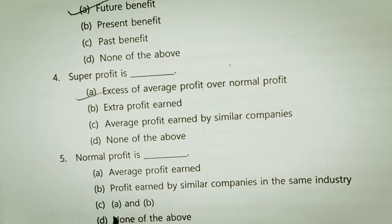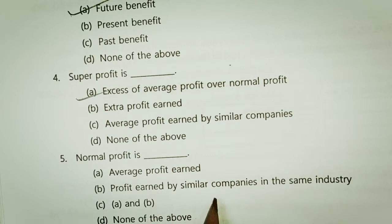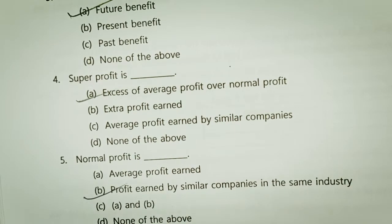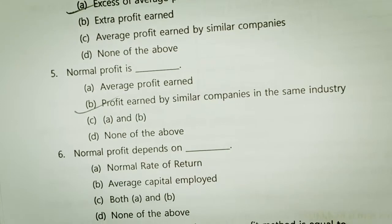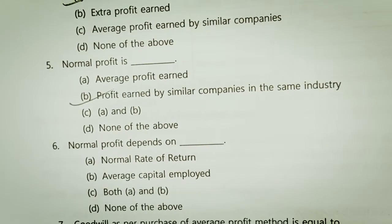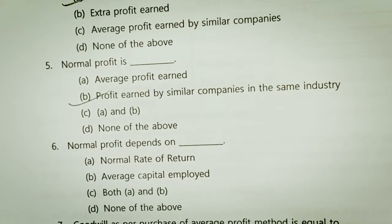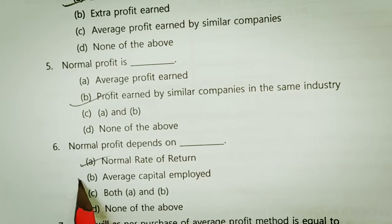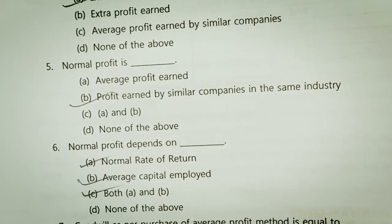Normal profit is the average profit earned, specifically the profit earned by a similar company in the same industry. Normal profit depends on the normal rate of return and the average capital employed — both are correct.